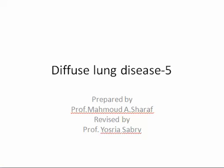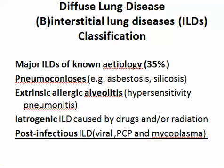This is diffuse lung disease number five. We will talk about the interstitial lung diseases of known etiology. This includes occupational disease, extrinsic allergic alveolitis, and drug-induced disease. There is also a group of diseases that are usually acute — the acute group of interstitial lung disease.